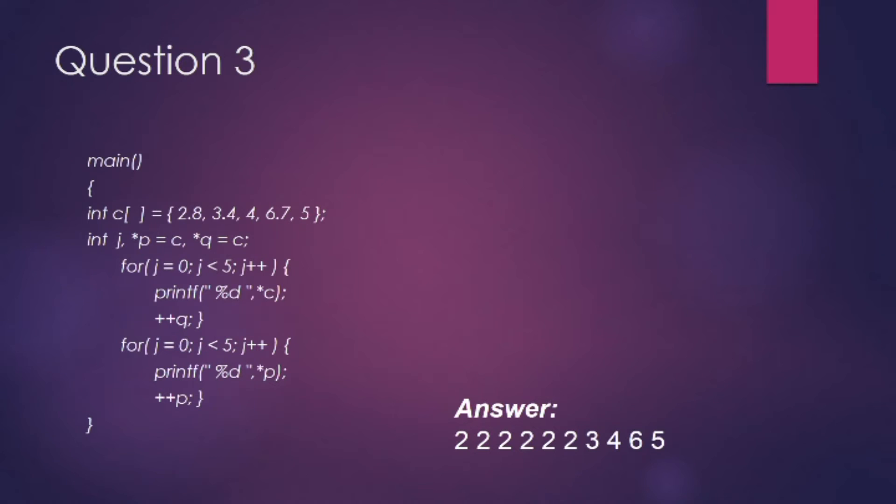Let's look at the third question. Here an integer array is given and then float values are assigned to the integer array, but the integer values will get stored in that array. There are two for loops after that. In the first for loop, we are printing the value of c itself. Initially pointer c is assigned to both p and q.